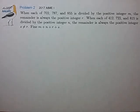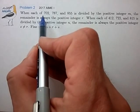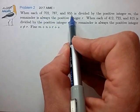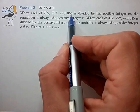Okay, let's rewrite this in the language of modular arithmetic. So we have that 702, 787, and 855 are all equal to r in mod m. Let's write that down.